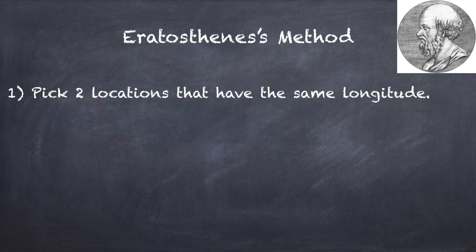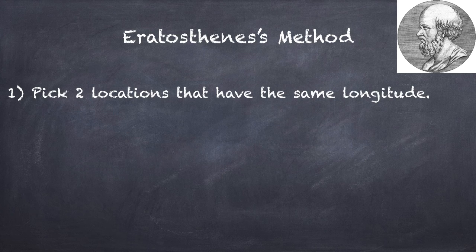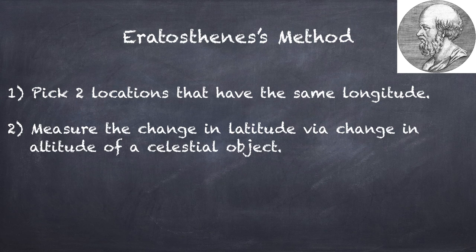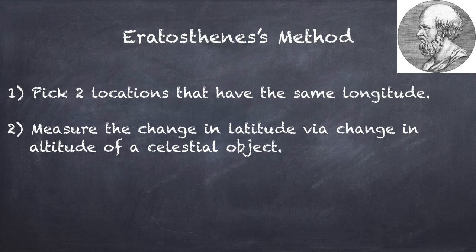First you pick two locations that have the same longitude. Then you measure the change in latitude between those two locations by measuring the difference in altitude of some celestial object, like the sun or a star.